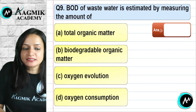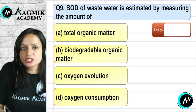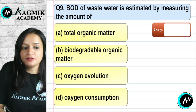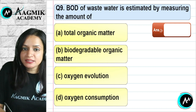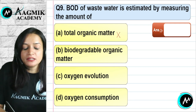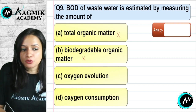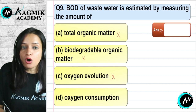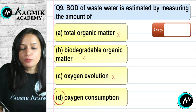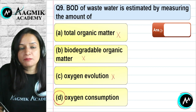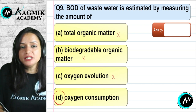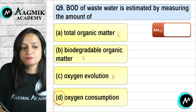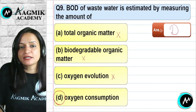Question number 9: The biological oxygen demand (BOD) of wastewater is estimated by measuring oxygen consumption. Measuring total organic matter is not how BOD is measured. Measuring biodegradable organic matter is also not correct. Oxygen evolution is also not the right method. BOD is measured by oxygen consumption. The correct option is D.